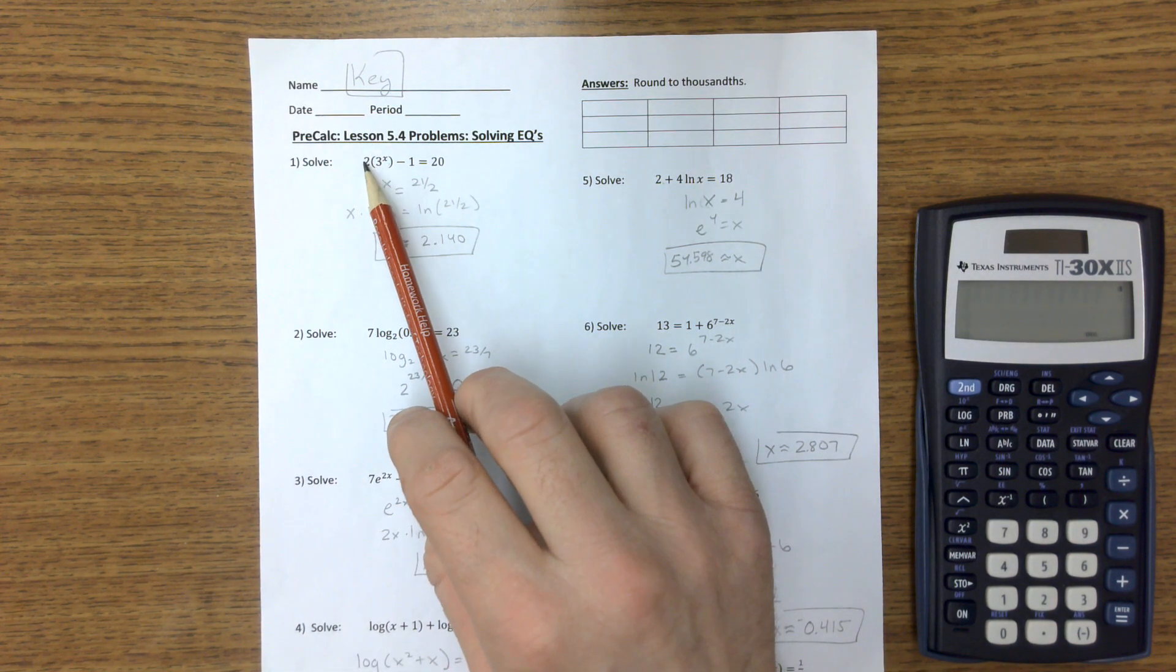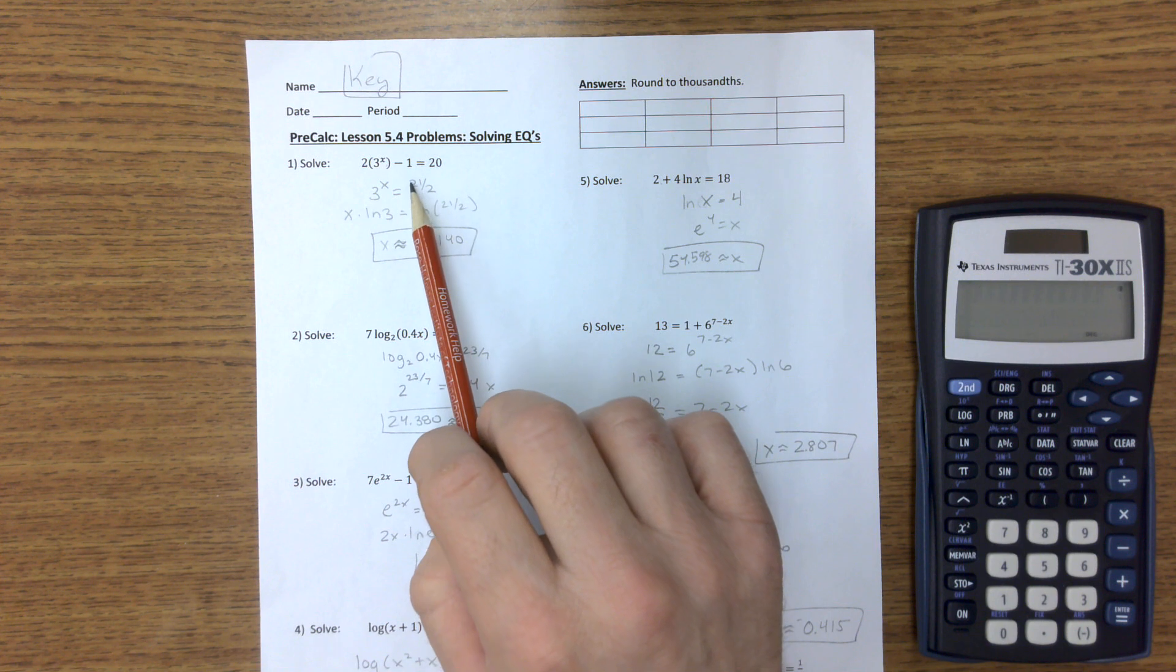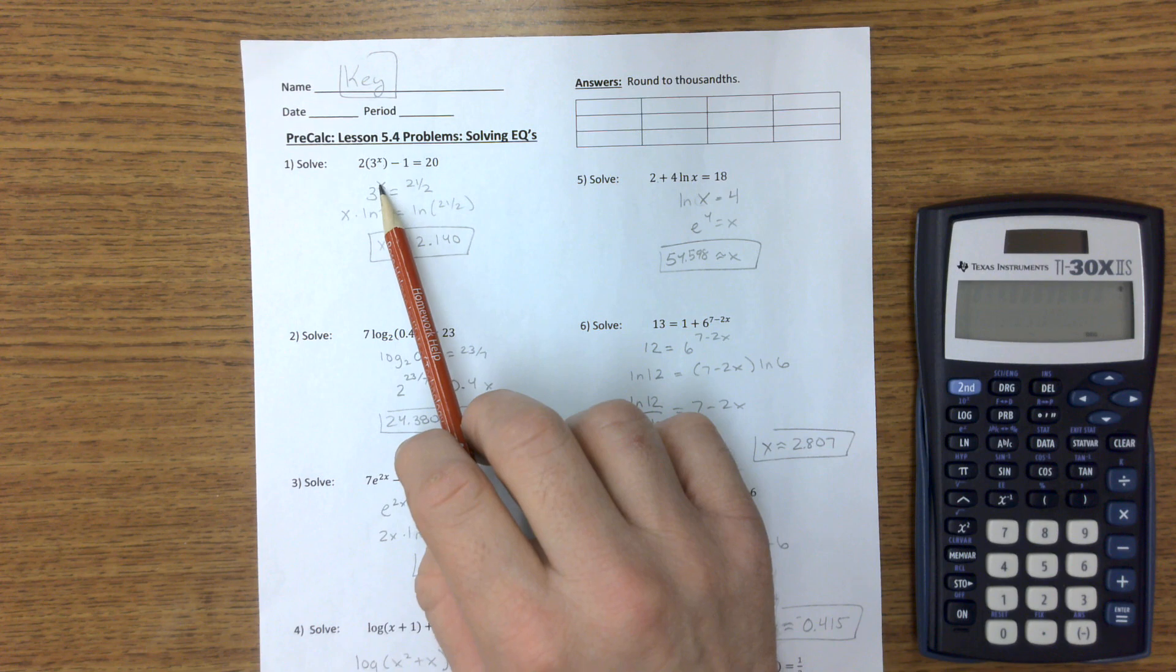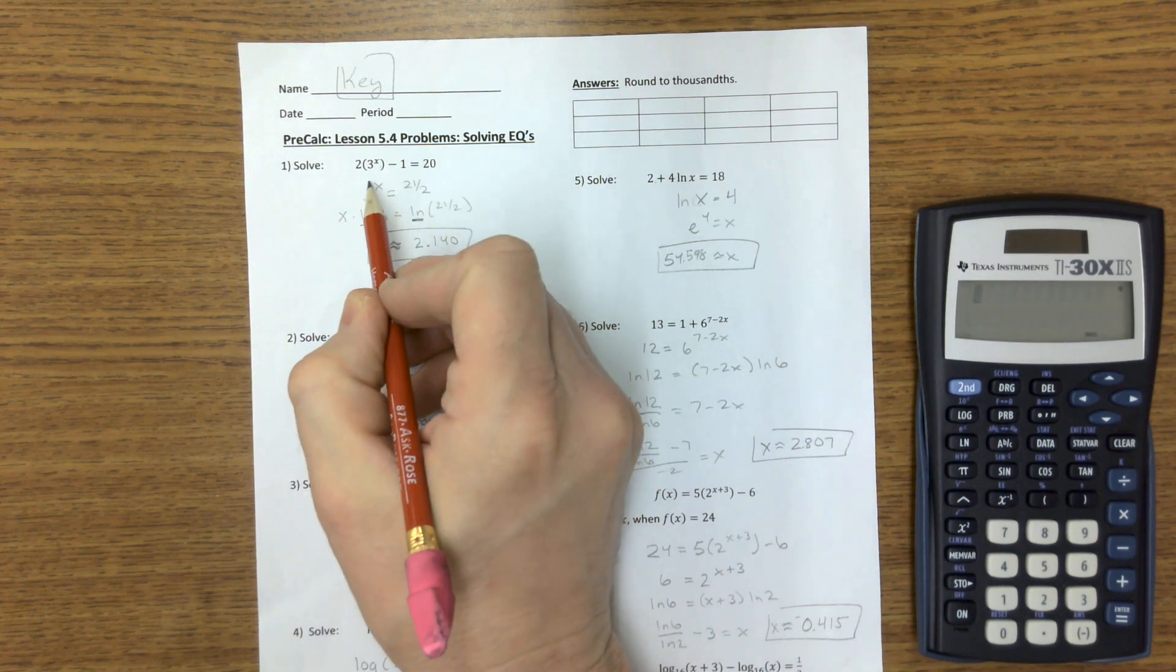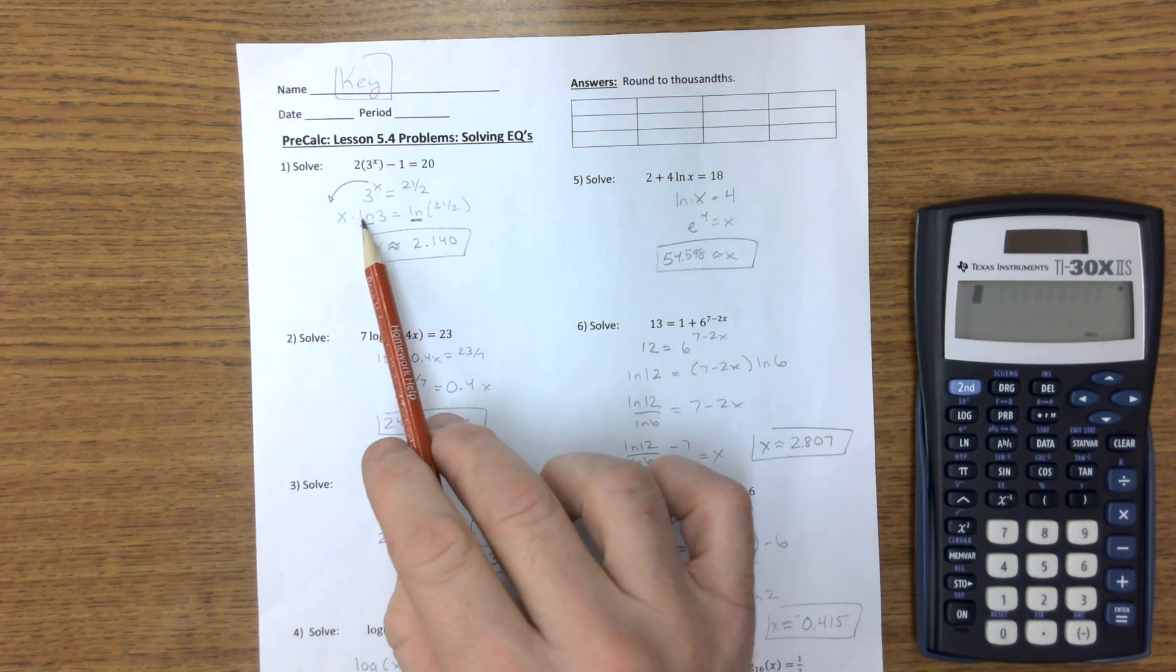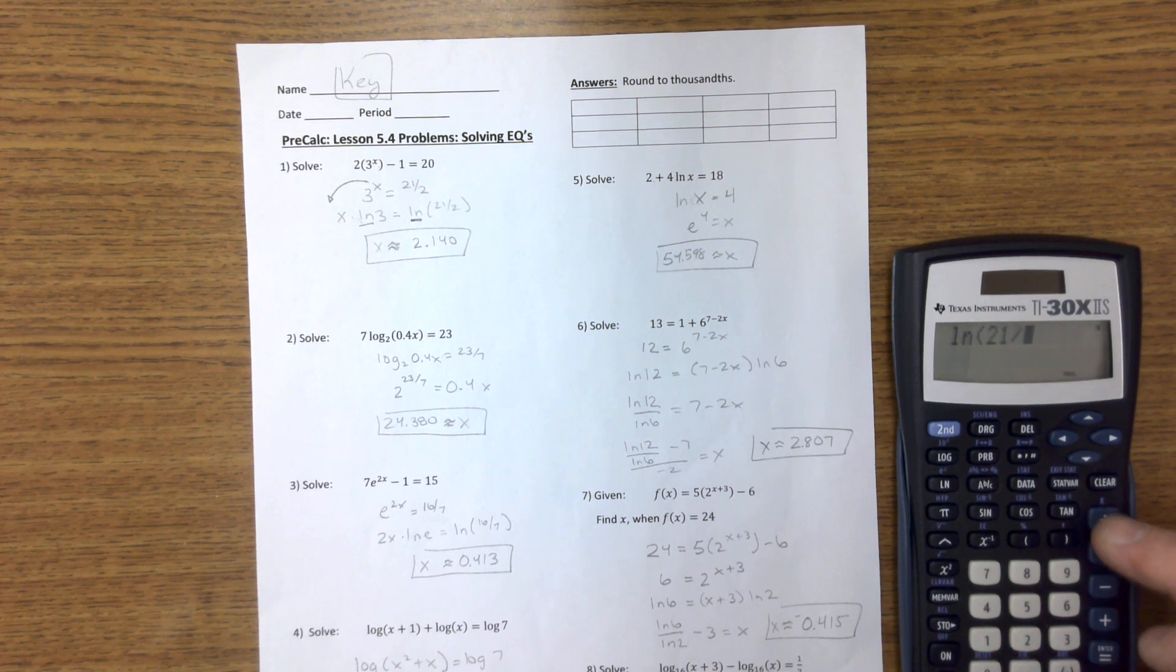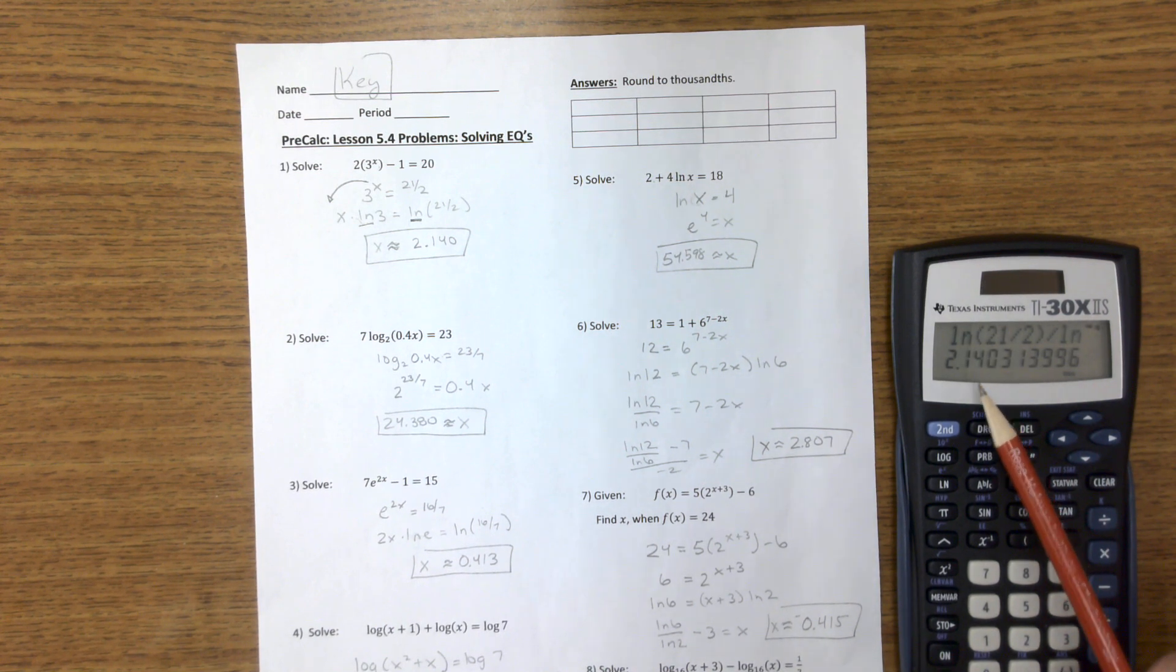If I'm trying to find this x, I'm going to add this 1 over and get 21, then divide the 2 over and get 21 divided by 2. So now I have a position where I just have a base and an exponent. If I take the natural log of both sides, that allows me to bring this exponent down to the front. Now I just have the natural log of this number and I can divide over that one. On your calculator, you're going to want to take the natural log and divide it by the natural log of 3. Make sure you close parentheses after this one so that these are separate. And the answer is 2.14.